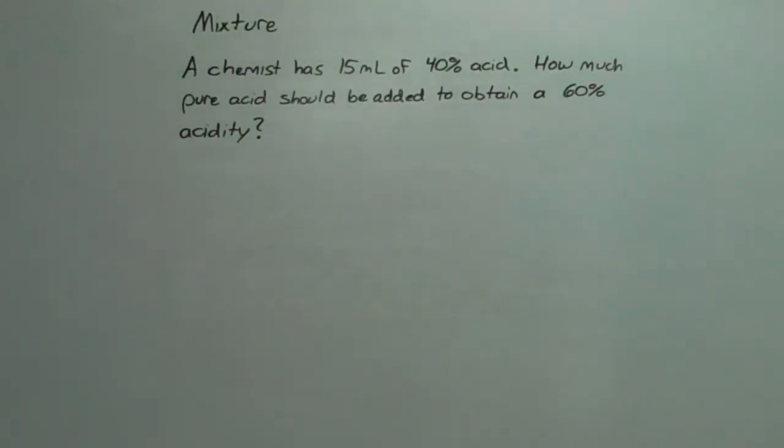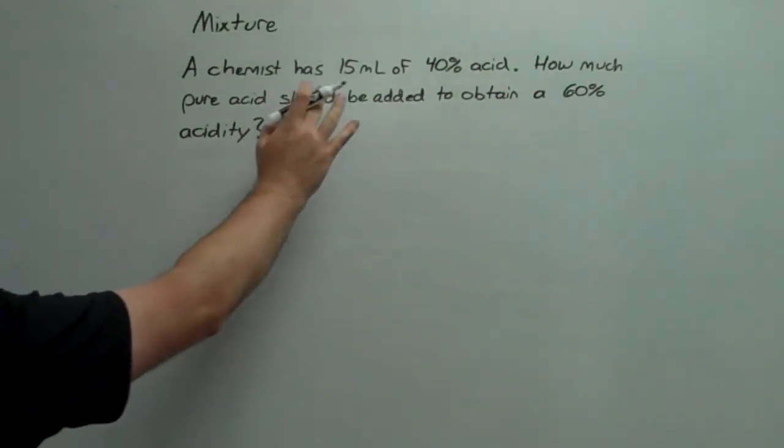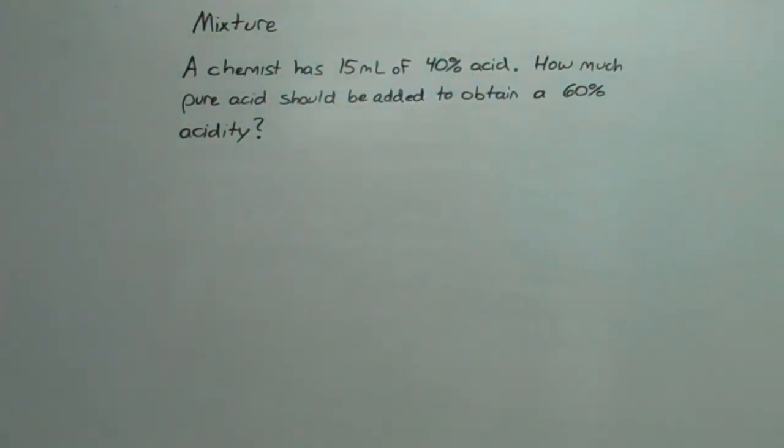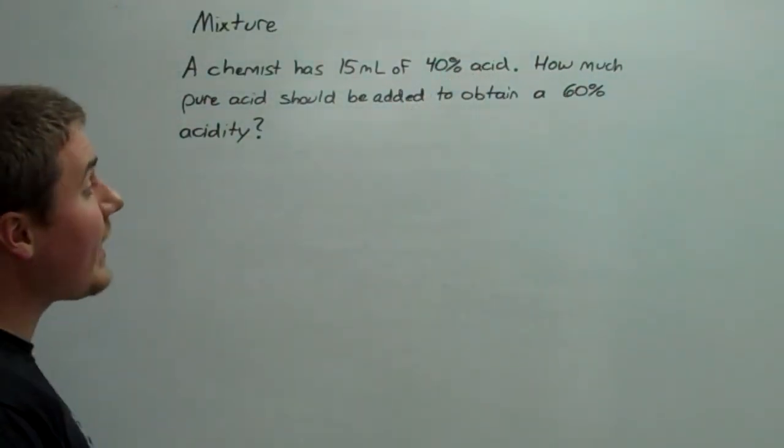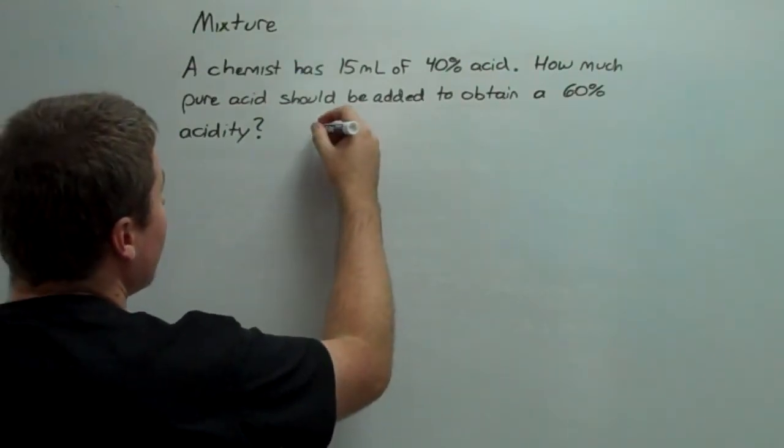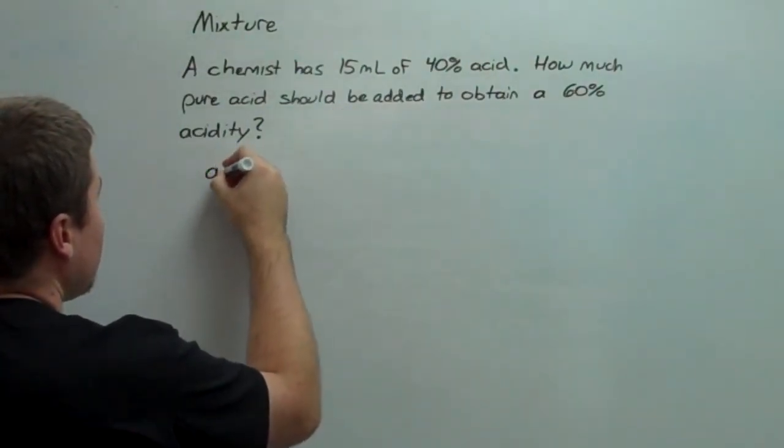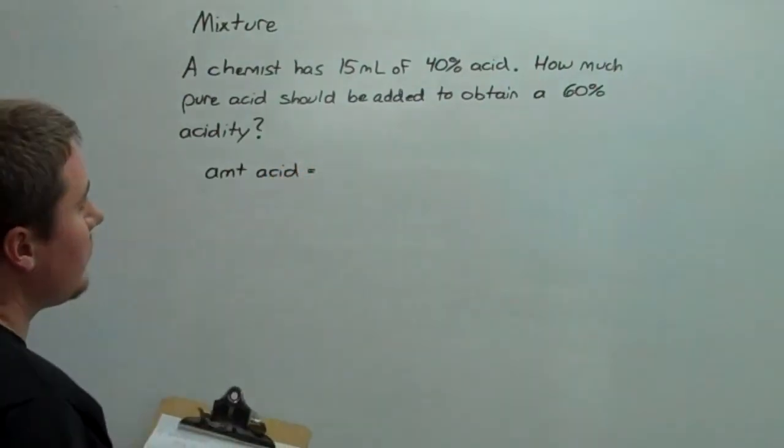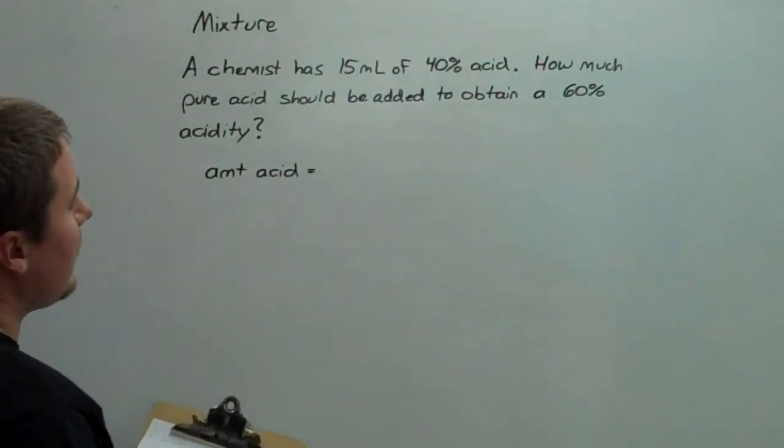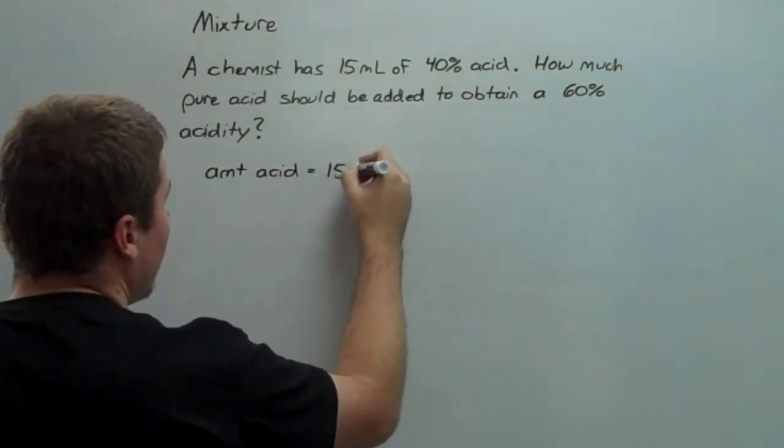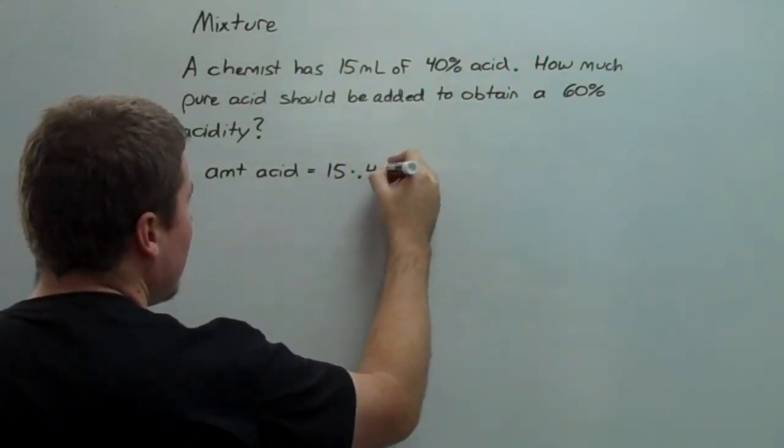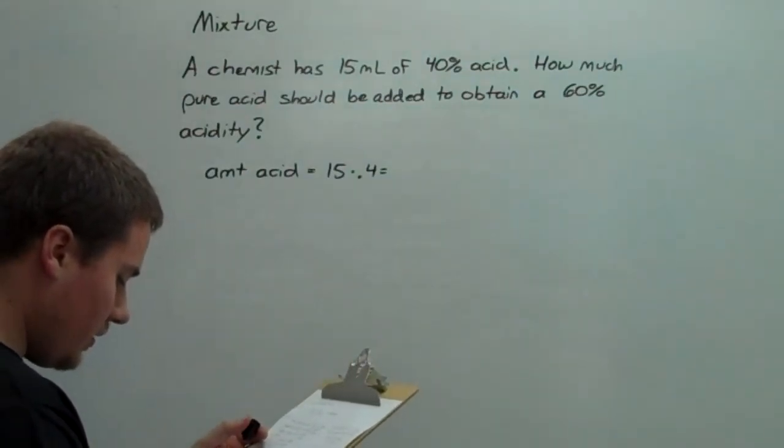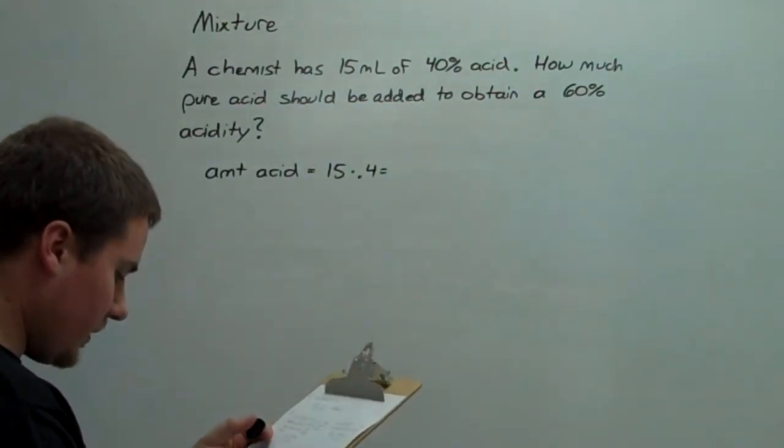The first thing that I'd note is that if I have 15 milliliters of 40% acid, I can create a data point from that. So, how much actual acid do I have in there? Well, the amount of acid at the moment is equal to 15 times 0.4, which equals a nice handy 6 milliliters.